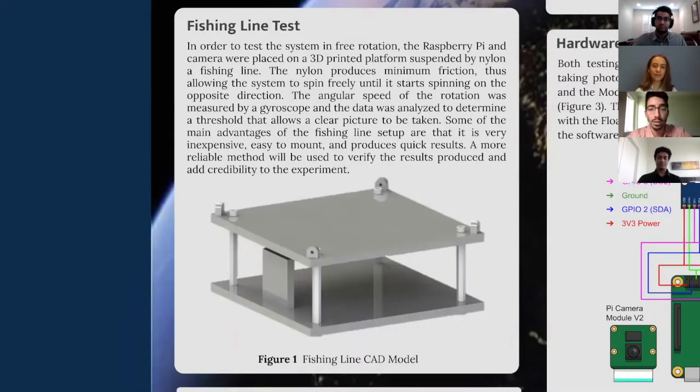As mentioned by Christine, in order to acquire data on how the quality of the picture is affected by the rotation of the CubeSat, two experiments were designed. One to test the system in free rotation, meaning the rotational speed varies freely, and one in control rotation, meaning the angular speed is maintained constant throughout the test. For the free rotation setup, the camera was placed on a 3D printed structure, shown in the picture below, along with the Raspberry Pi, a gyroscope, and a power source.